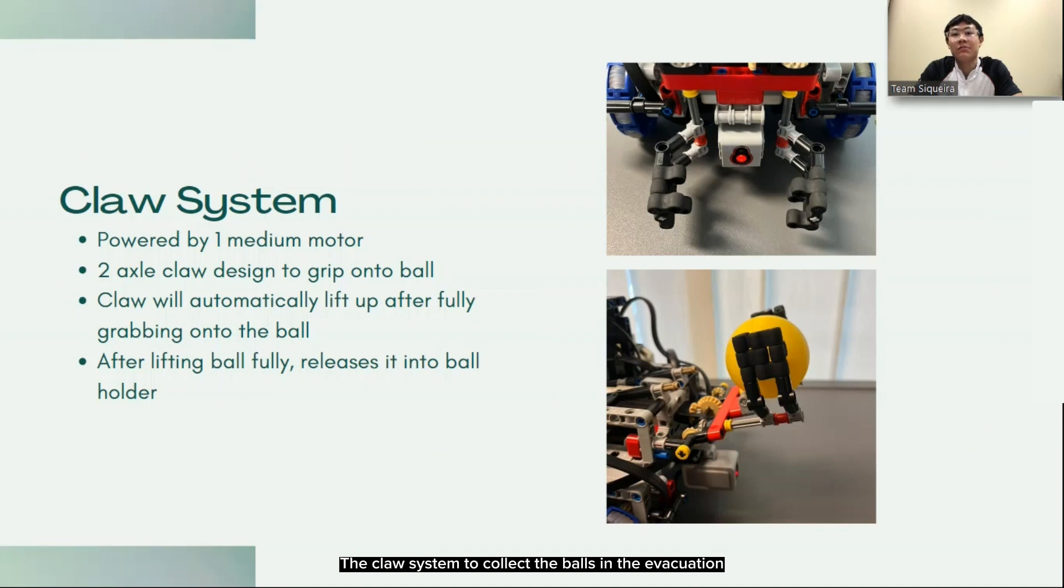The claw system to collect the balls in the evacuation zone uses a grab and lift system which is powered by one medium motor. After collecting the ball, it will deposit it in the ball and cube storage space.